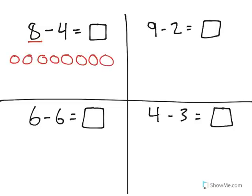The second number shows how many you are going to remove or take away from that group. So I need to take away 4 from this group. Take away 1, 2, 3, 4.